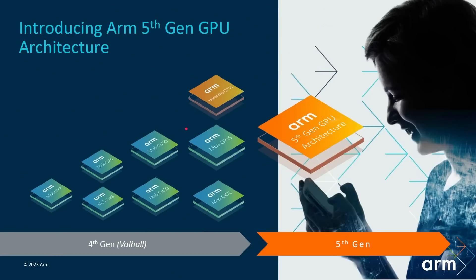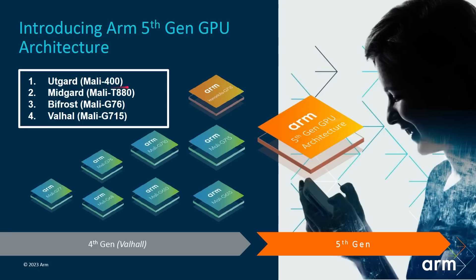The new GPU is ARM's fifth generation of GPU architecture — a new microarchitecture defining how the GPU is built. This is different from Valhalla, which was the fourth generation, seen in the Mali G77, G78, G710, and Immortalis G715. Way back around 2008, the Mali 400 used the Utgard architecture, followed by Midgard, then Bifrost, then Valhalla — all taken from Norse mythology. But now ARM have dropped the Norse mythology theme and are simply calling it the fifth generation of GPU architecture.